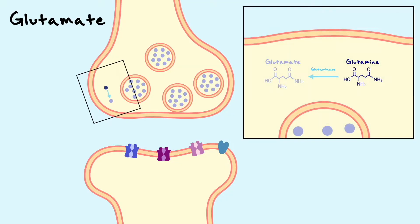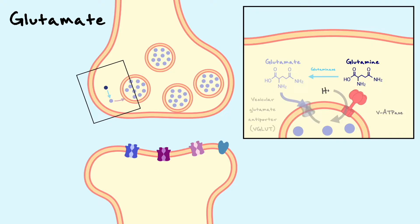Glutamate is directly synthesized at the terminal from glutamine in a straightforward reaction catalyzed by the enzyme glutaminase. To get the transmitter inside the vesicles, the vesicles have a V-class ATPase that pumps protons inside the vesicle, and then the proton gradient is used to import the glutamate inside the vesicle. The transporter that mediates this exchange is named the vesicular glutamate transporter.